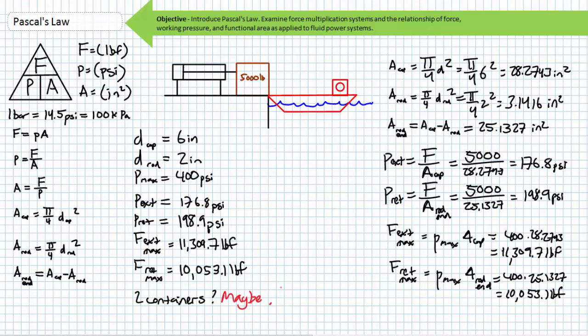So the answer to our final question is a definitive maybe. Two containers together represent a 10,000-pound load. The system could theoretically push two containers onto the barge simultaneously, but I sincerely doubt it could pull two containers off simultaneously — the maximum retraction force is only slightly over the requirement. Accounting for inefficiencies due to leaks, friction, unintended pressure drops, and play between mechanically coupled loads, this system as currently implemented likely would not handle this in the real world. Pascal's Law calculations represent theoretical maximums only — real-world complications must be taken into account.